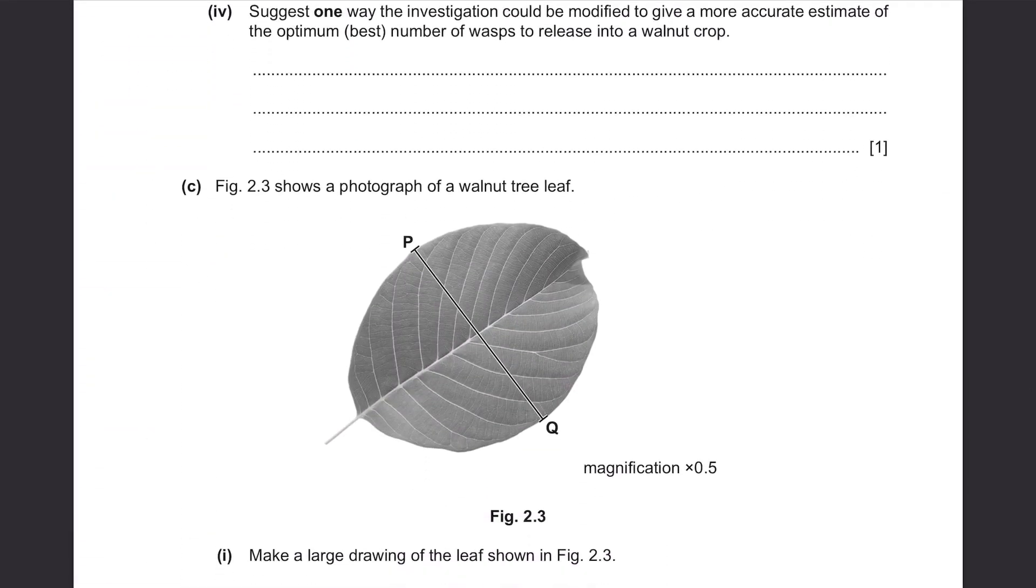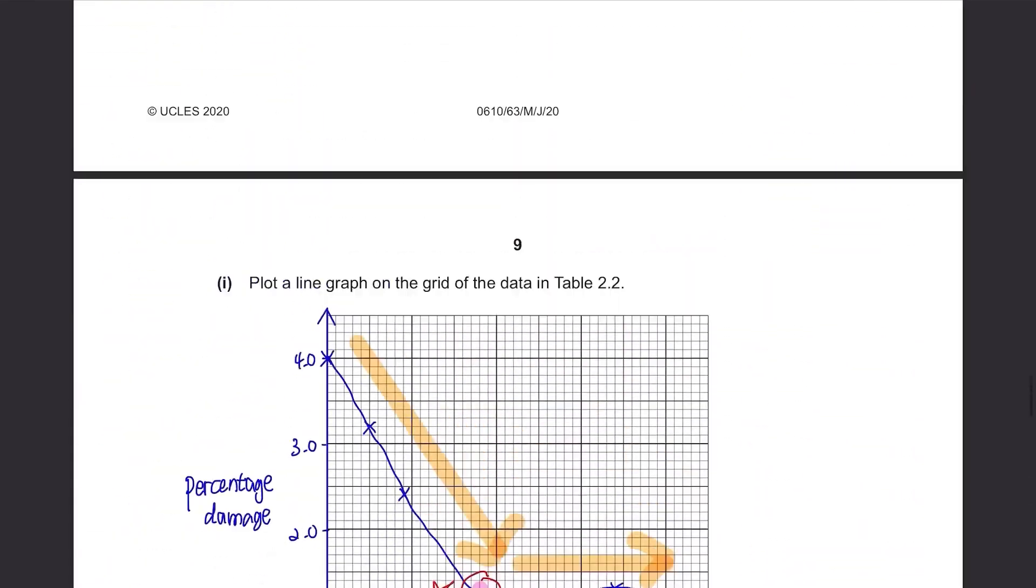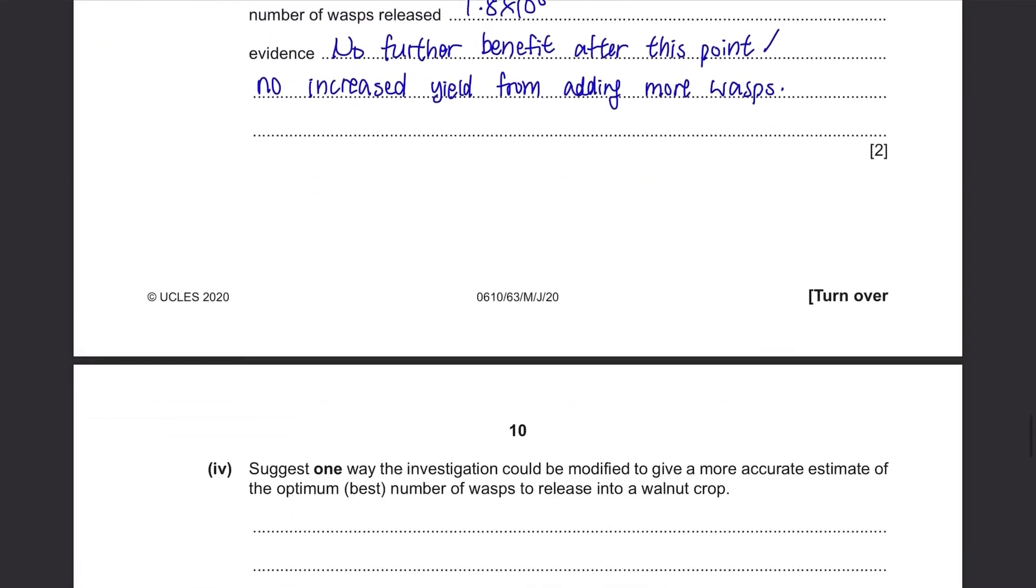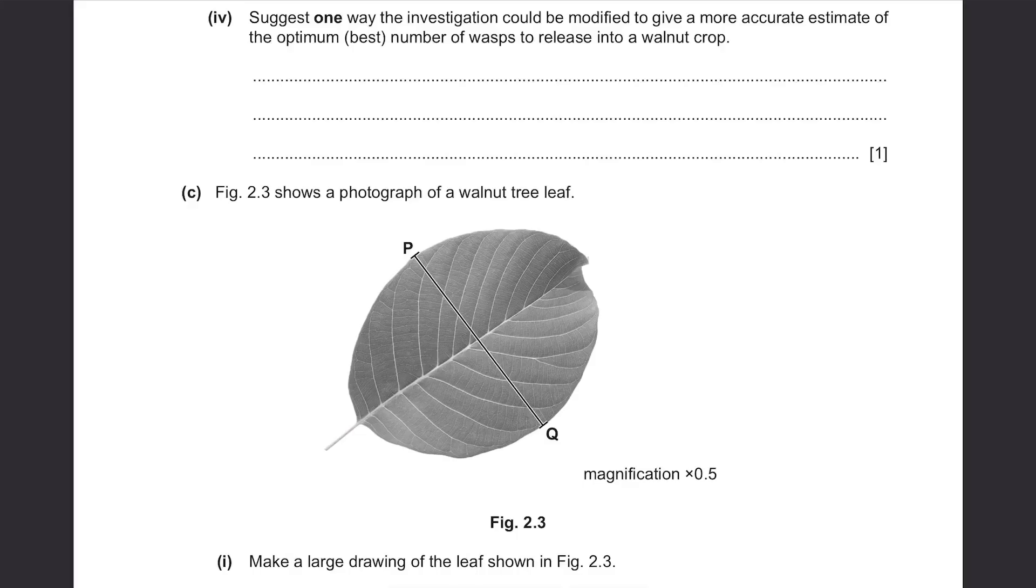Suggest one way the investigation could be modified to give a more accurate estimate of the optimum or best number of wasps to release into a walnut crop. The way we do this is to have more intermediate values, meaning that since in our graph, we have a big gap between 0.9 and 1.8, so instead of jumping straight to 1.8, we can add more values in between such as 1.1, 1.5, 1.7 and etc. So add more intermediate values.